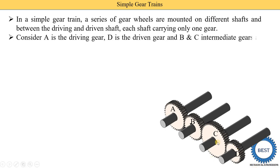Gear A is the driving gear, connected to the main power source or prime mover — such as an IC engine or electric motor. Gear D is the driven gear, which is driven using gears A, B, and C. Gears B and C are the intermediate gears installed between the driving gear and the driven gear. Power is transmitted from shaft A to shaft D through the intermediate gears.